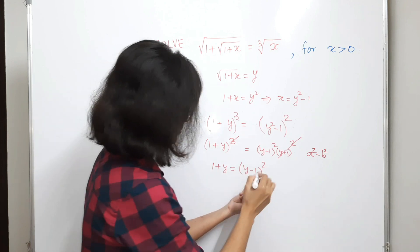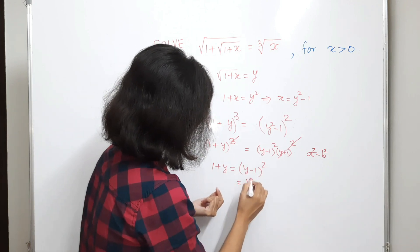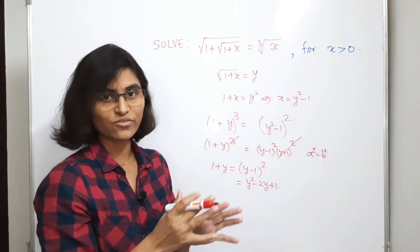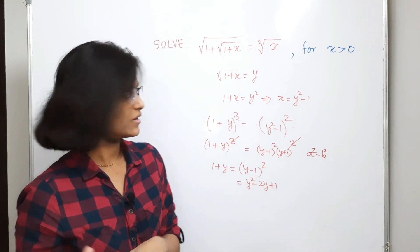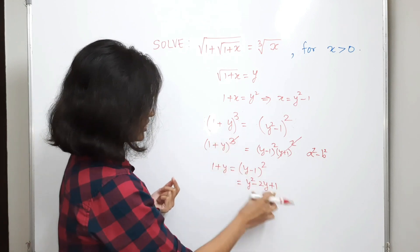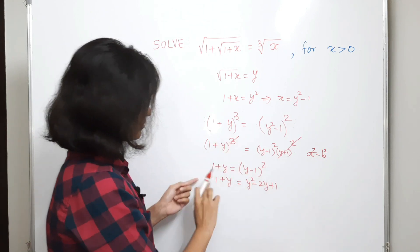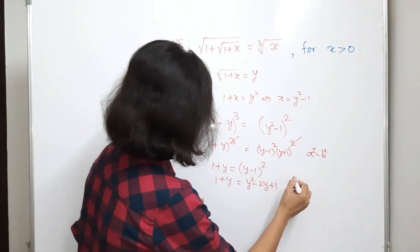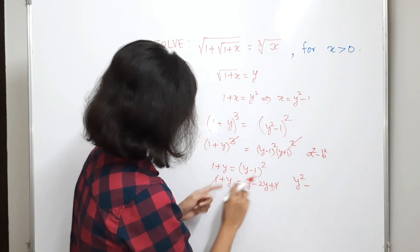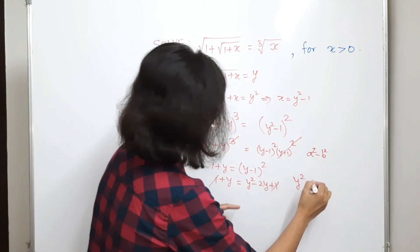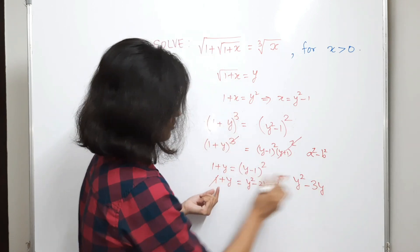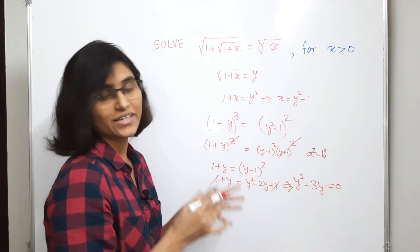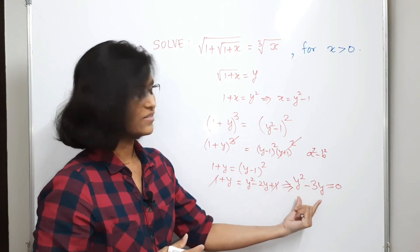Let's simplify. Expanding (y-1)² using the formula (a-b)² = a²-2ab+b², we get y²-2y+1. So the equation becomes 1+y = y²-2y+1. Rearranging: y²-3y = 0. This is a very simple equation.